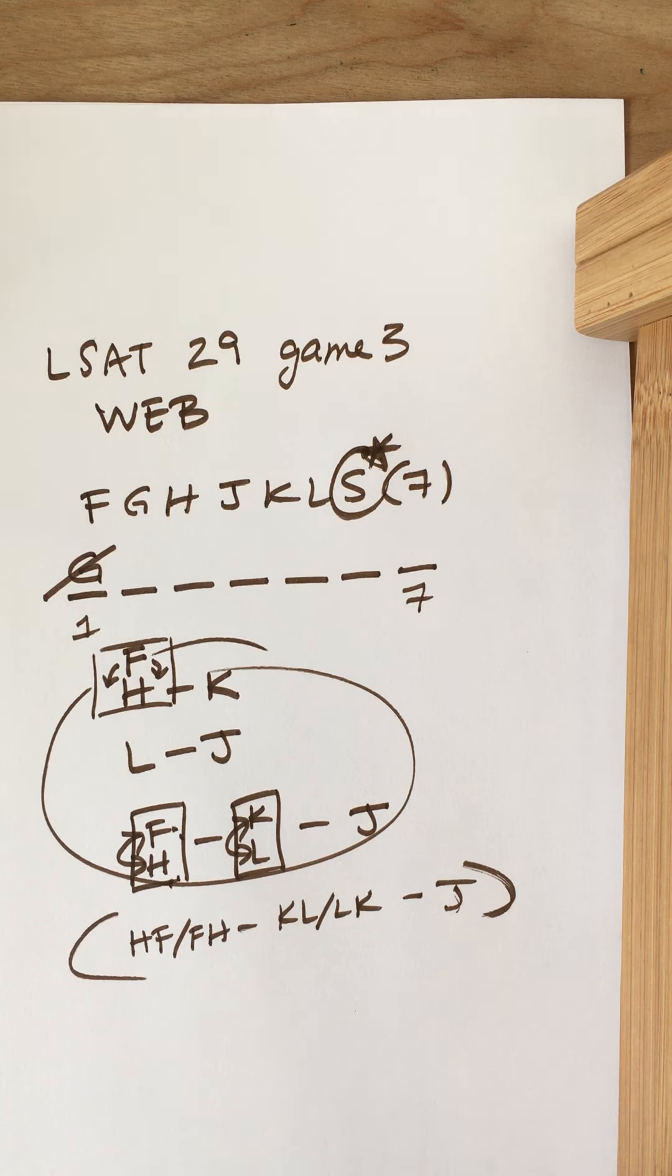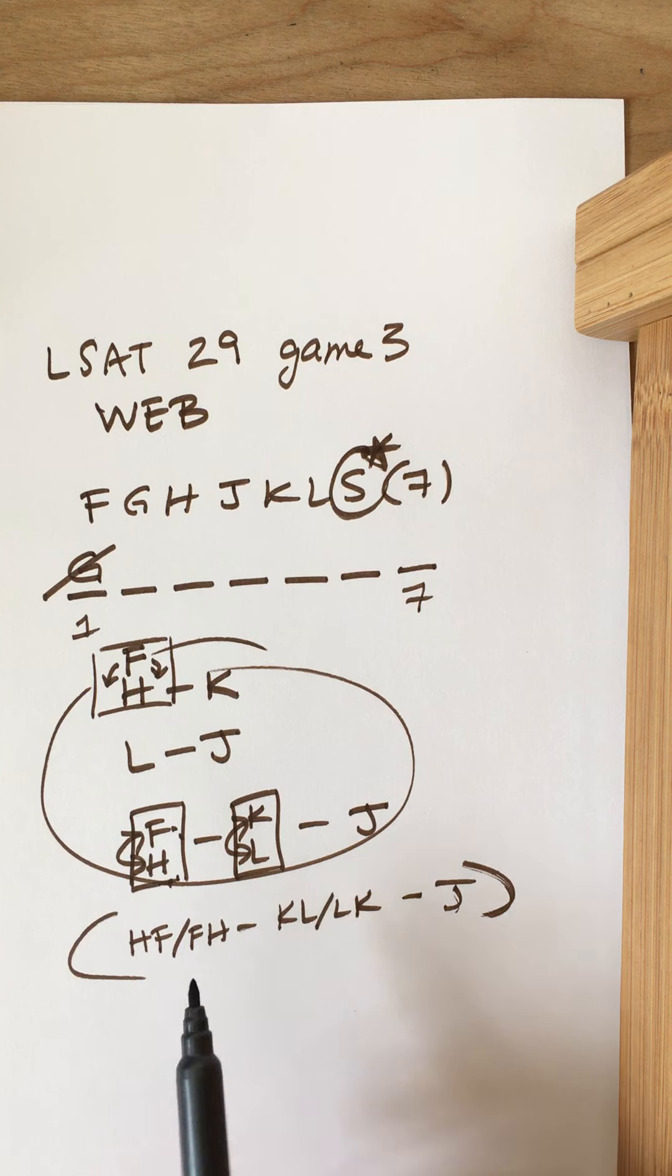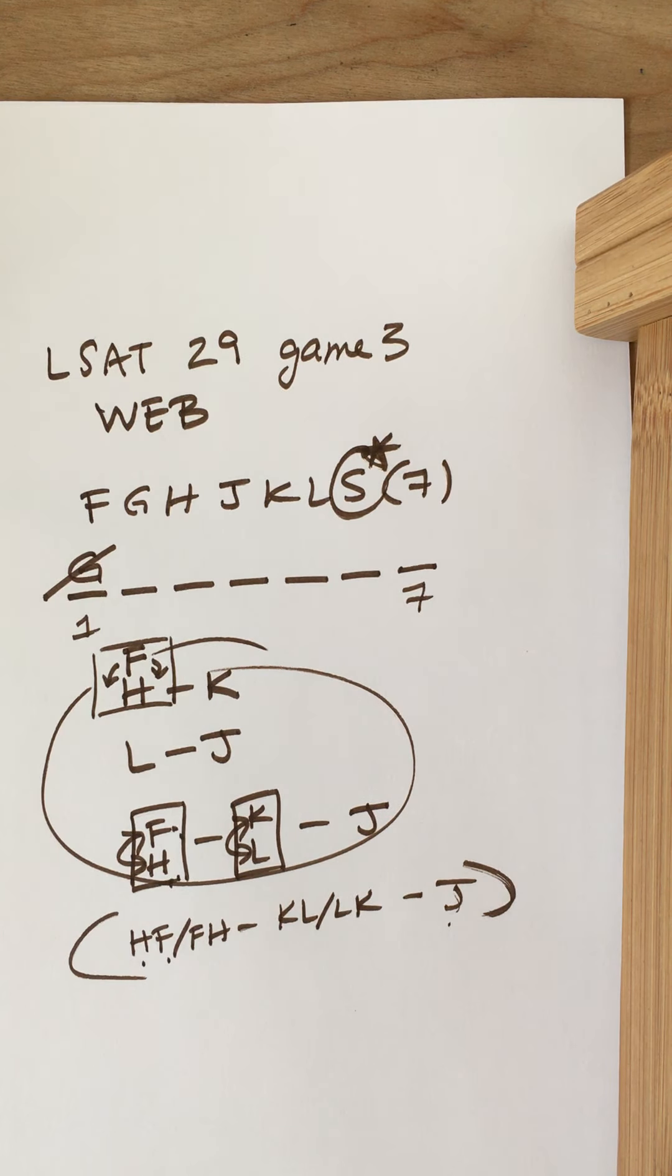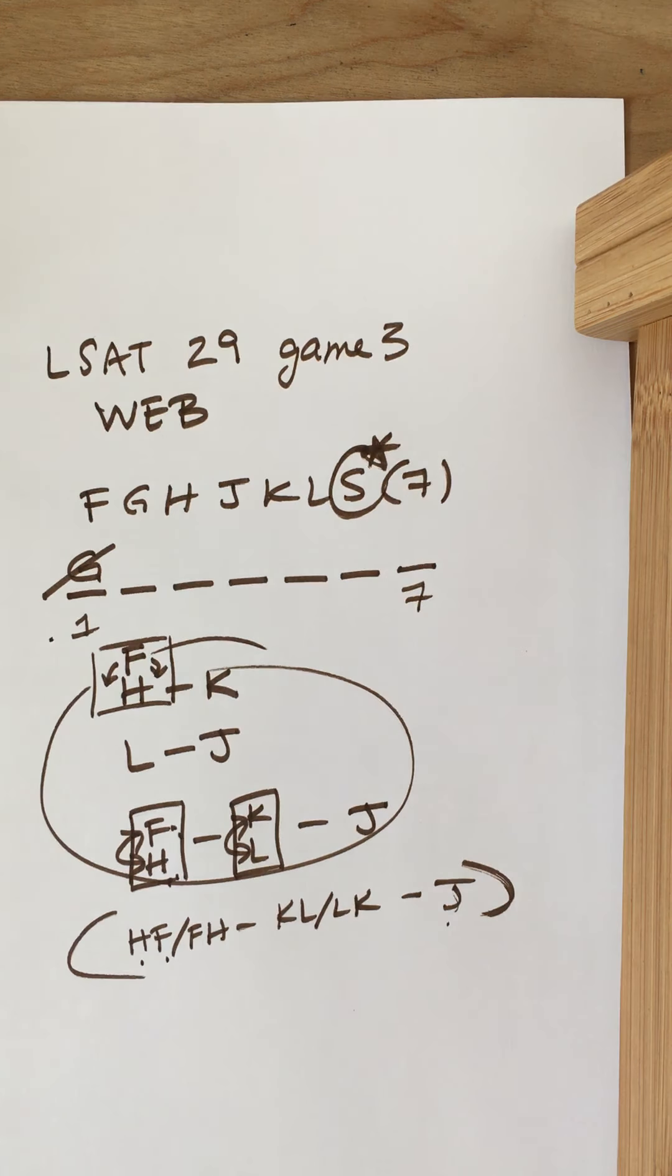And then out of these players, H or F could be first, J could be last, and neither K nor L could be first or last. And G could be last but can't be first. So always kind of a good idea to make note of those things.